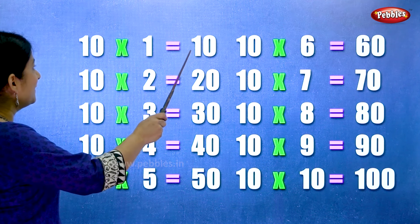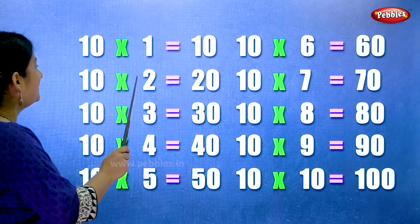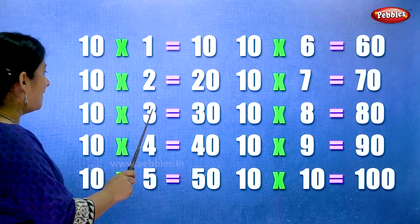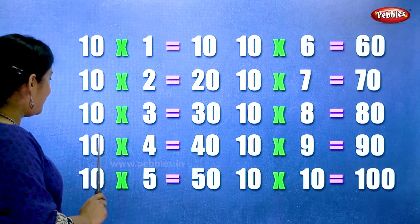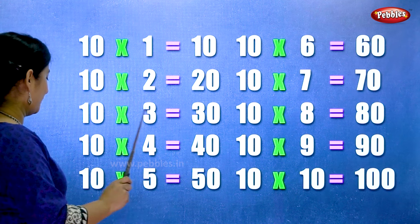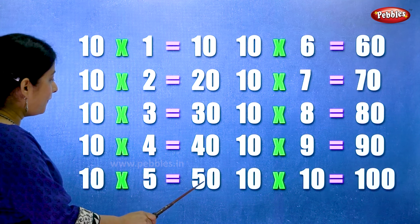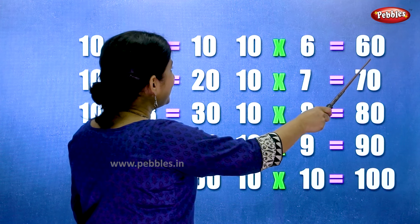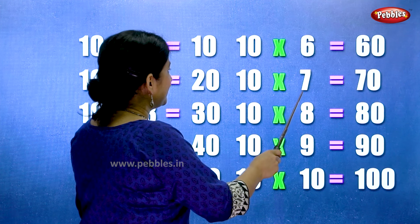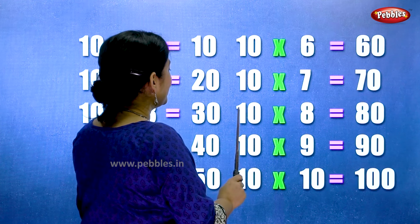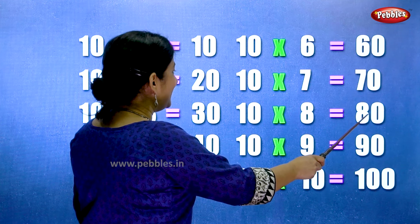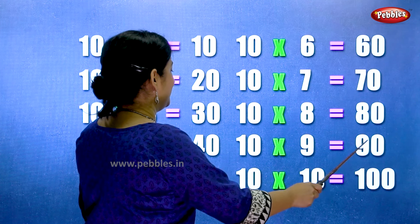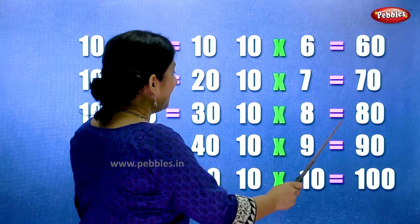Let's learn the table of ten one more time. Ten ones are ten. Ten twos are twenty. Ten threes are thirty. Ten fours are forty. Ten fives are fifty. Ten sixes are sixty. Ten sevens are seventy. Ten eights are eighty. Ten nines are ninety. Ten tens are hundred.